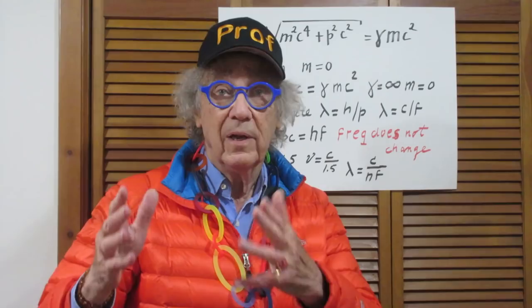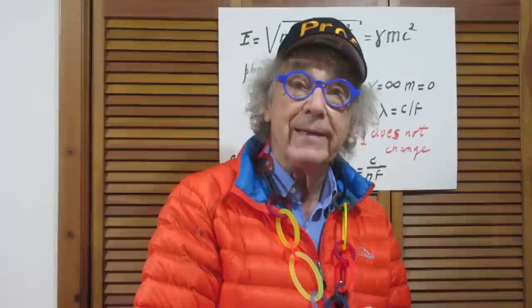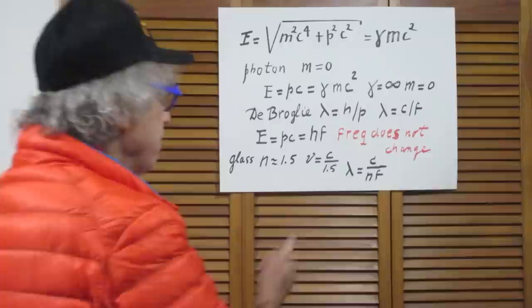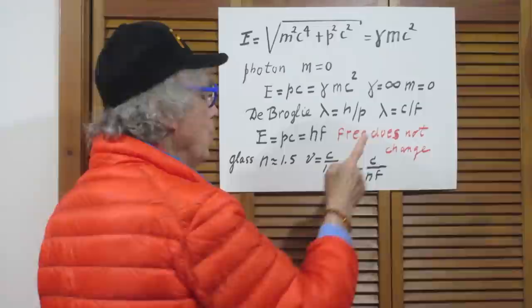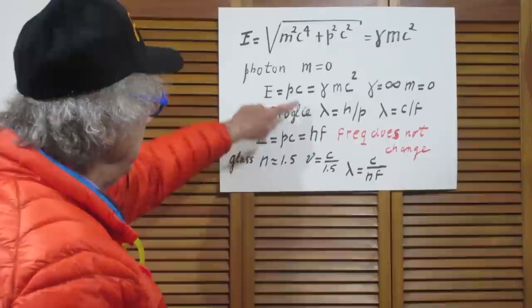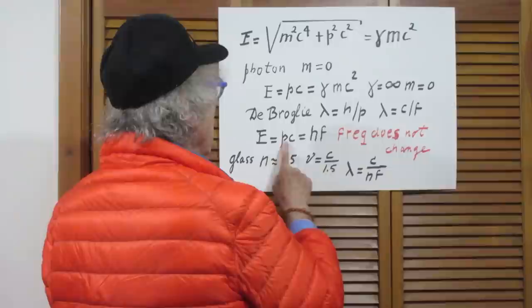So lambda equals c divided by the frequency if we think of the light in terms of a wave, which is perfectly allowed. So this is Newtonian. The wavelength of anything that moves with speed c is c divided by the frequency of the wave. So we go back to E equals pc, and we substitute for p h divided by lambda, and we substitute for lambda c divided by f. And you find that the energy of a photon is hf. It only depends on its frequency.